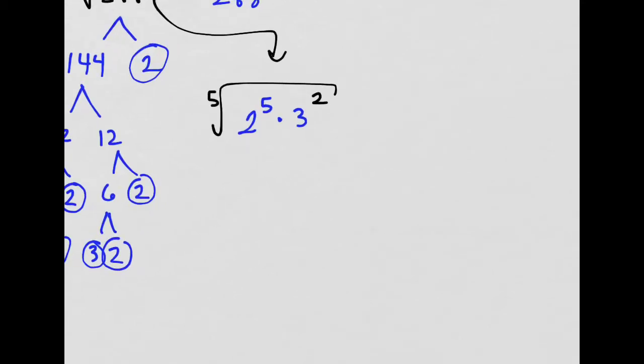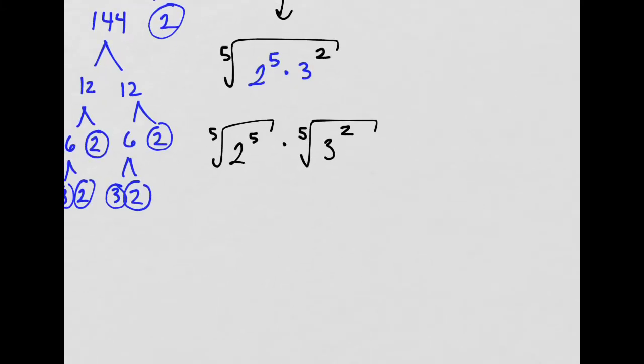Well, if I now break up the radical, I can have 2 to the 5th underneath the 5th root times—you can hear that my nose is clogged—times 3 to the 2nd under the 5th root. So, look at this. That cancels out, and I just have 2 on the outside.